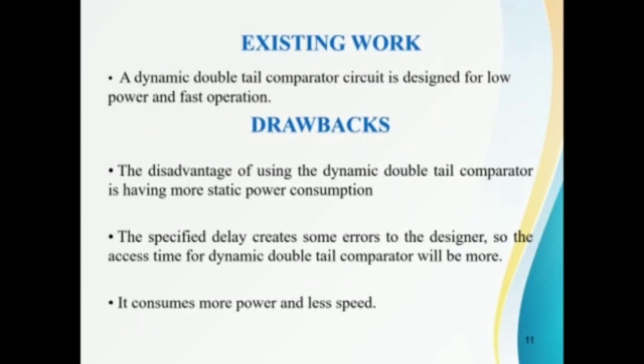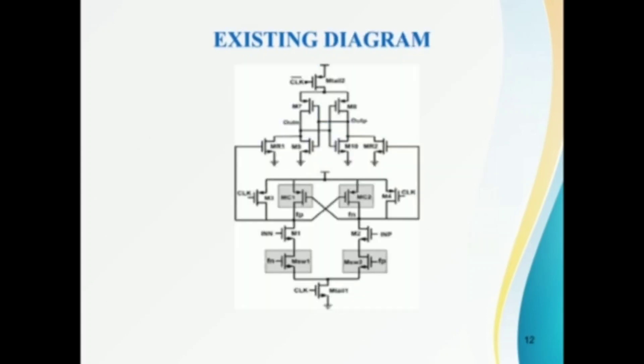This is the existing work. A dynamic double tail comparator circuit is designed for low power and faster operations. And the drawbacks? The disadvantages of using the dynamic double tail comparator is having more static power consumption. It consumes more power and less speed.